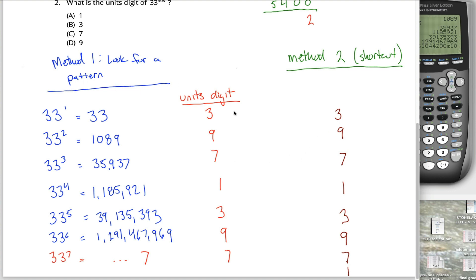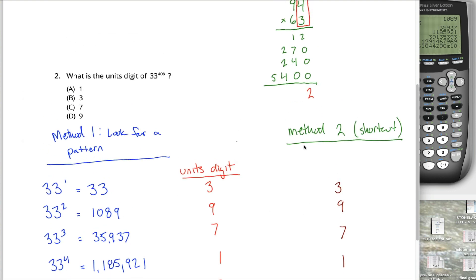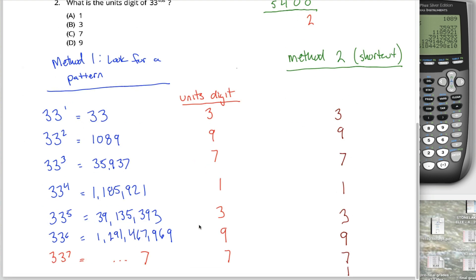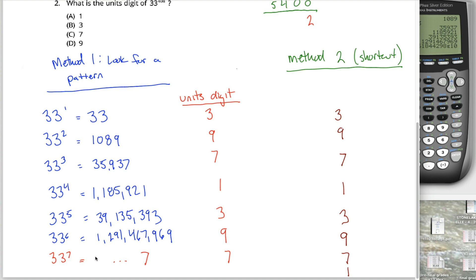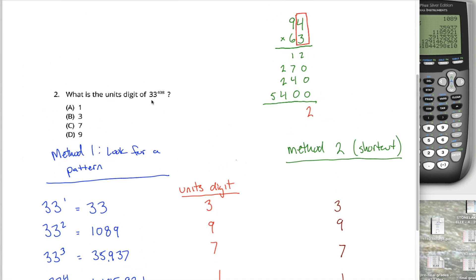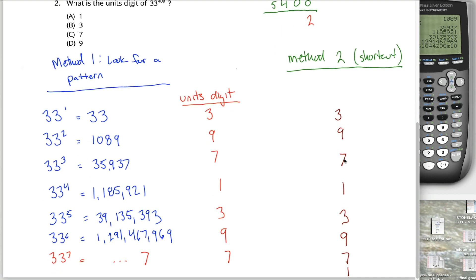It's not just that there appears to be a pattern. We have irrefutable proof of what the unit's digit would be for 33 raised up to any power. I know that 33 to the seventh power must end in a seven, for example. Unfortunately, the question doesn't ask me for 33 to the seventh power. It asks me for 33 to the 408th power. Well, let's see, this pattern repeats every four times.